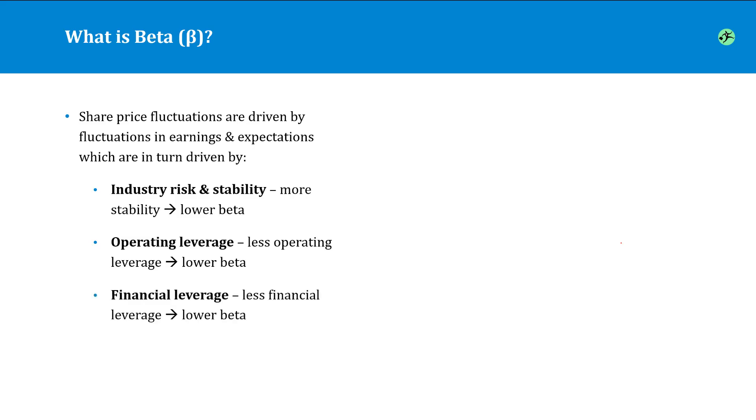And last, if a company has lower financial leverage, i.e. it has less debt in its capital structure, the company's earnings are going to be more stable, and therefore the beta will be lower.